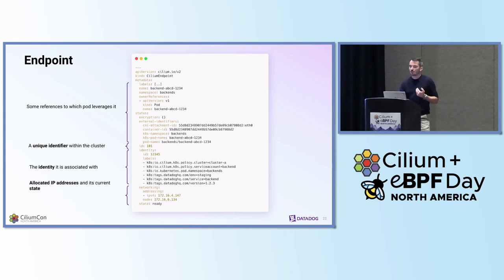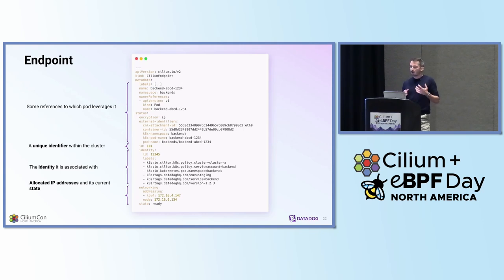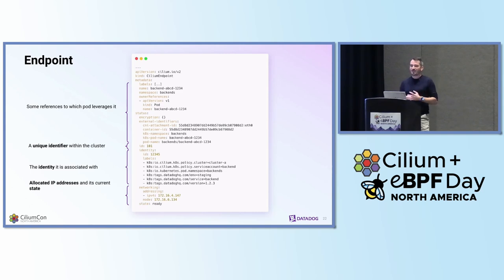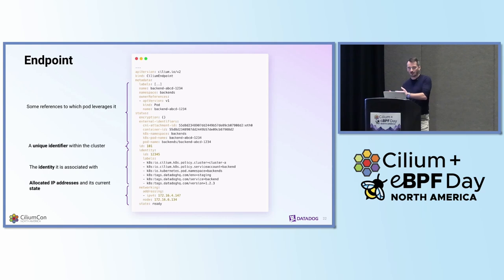Endpoints are here to keep track of the necessary mappings between Kubernetes abstractions and the actual network implementation details of the pods. They have a one-to-one mapping with a pod, their own unique ID within the cluster, a one-to-one mapping with an existing identity that matches the labels of the pod being referenced, and they also contain the IP address of the pod and the node that the pod is running on.